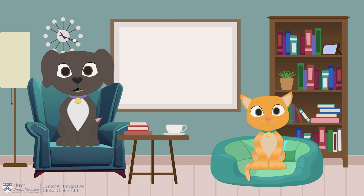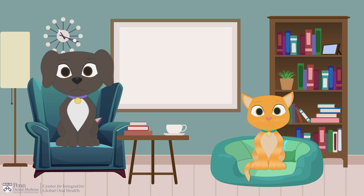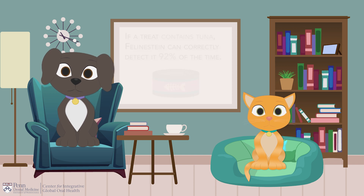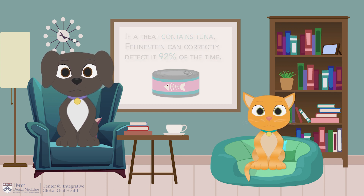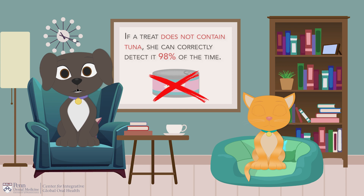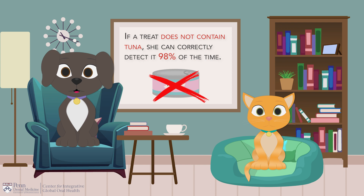Hans, I spoke to Feline Stein, and she gave me some information about her abilities to detect specific treat ingredients. For example, if a treat contains tuna, she can correctly detect it 92% of the time. If it doesn't contain tuna, she can correctly detect that it doesn't contain tuna 98% of the time.